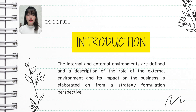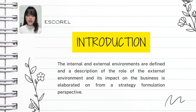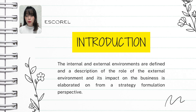For our introduction, the internal and external environment of a business refers to the factors that influence its operations. The internal environment includes elements within the company like its resources, employees, culture, and internal processes — things the business can control and optimize to perform better. While the external environment consists of factors outside the company that it cannot directly control.